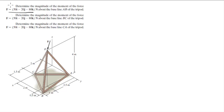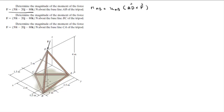Let's do this part first. The moment about AB is given by U_AB dot (AD cross F). The first thing you need to find is U_AB, which is a unit vector with a magnitude of 1. U_AB is given by the vector AB divided by its magnitude.